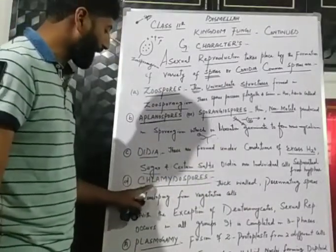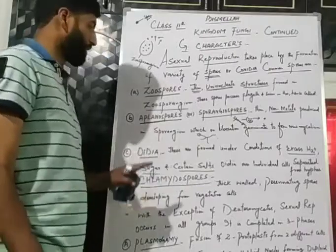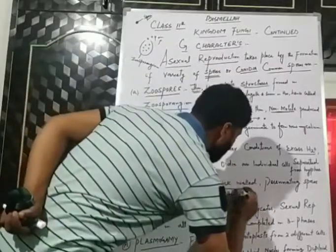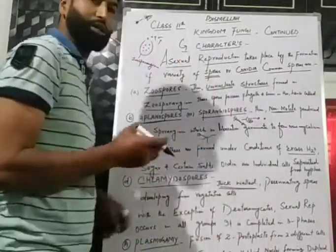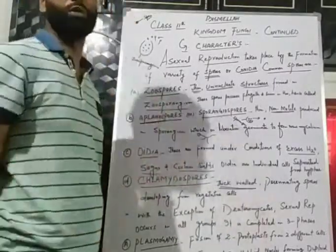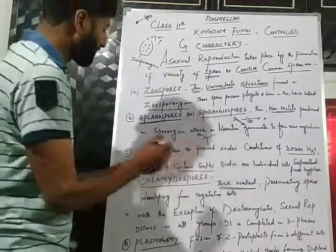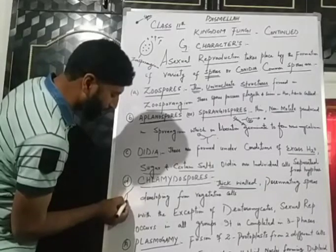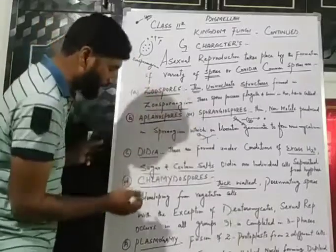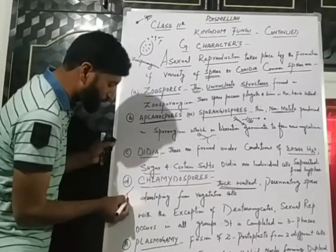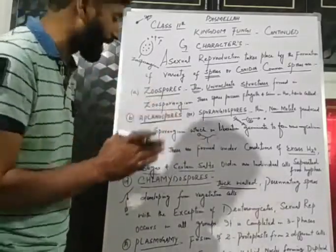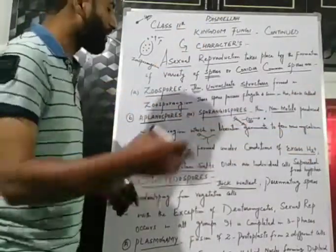The fourth category is chlamydospores. Unlike thin aplanospores, chlamydospores are thick-walled, resting spores. They develop from vegetative cells, and these individual parts develop into new hyphae or new fungi.